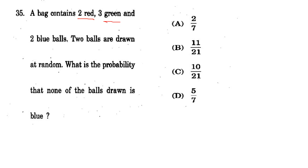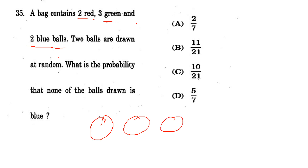Question 35: A bag contains 2 red, 3 green, and 2 blue balls. 2 balls are drawn at random. What is the probability that none of the balls drawn is blue? Options: 2/7, 11/21, 10/21, 5/7. The correct answer is option C - 10/21. The full calculation method will be provided in the course.